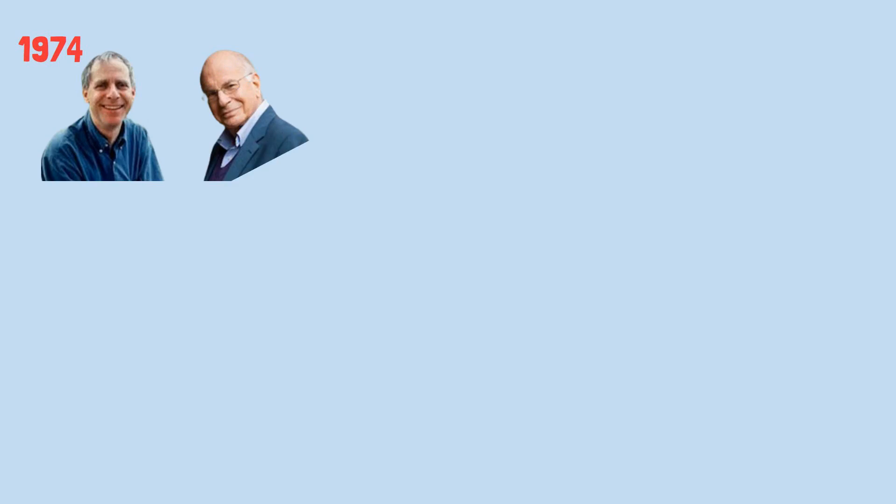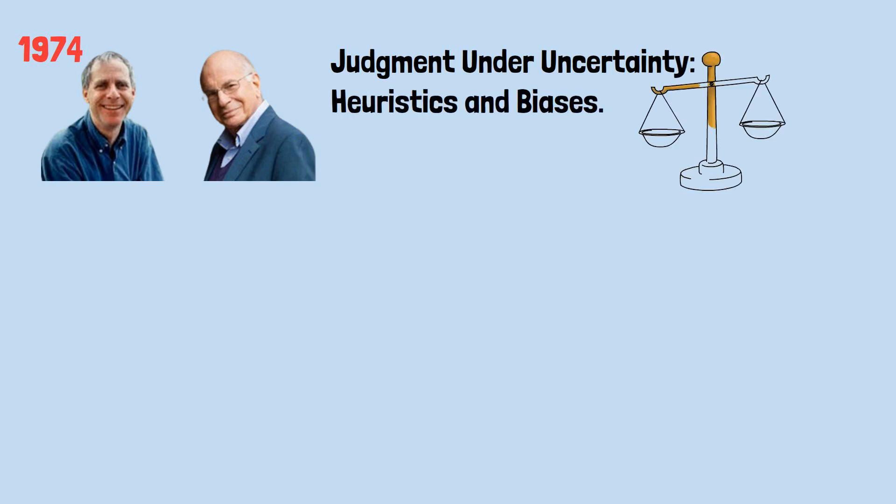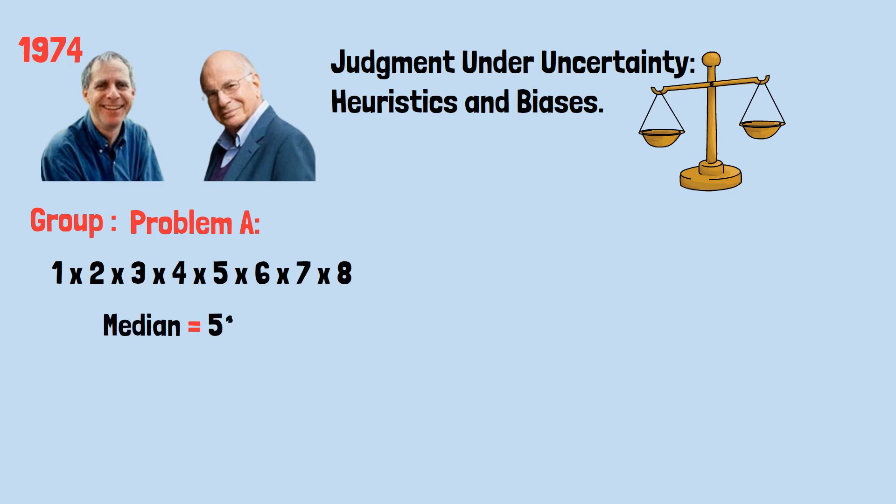In 1974, psychologist Amos Tversky and Daniel Kahneman published an article called Judgment Under Uncertainty, Heuristics and Biases. They ran exactly this experiment. The group who tried to solve problem A, multiplying with the small numbers first, had a median estimate of 512.